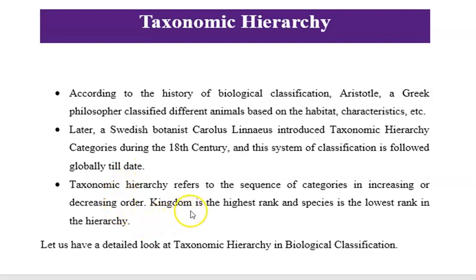Taxonomic hierarchy refers to the sequence of categories in increasing or decreasing order. Kingdom is the highest rank and species is the lowest rank in the hierarchy. Let us have a detailed look at taxonomic hierarchy in biological classification.